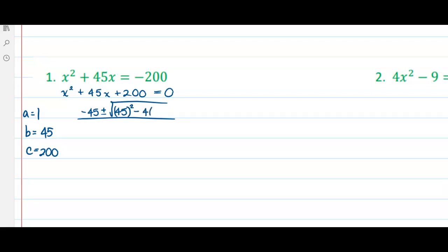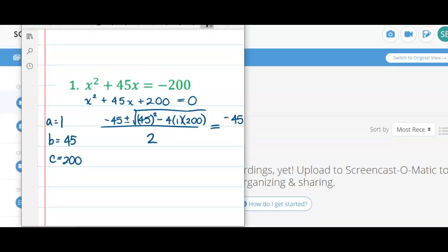Minus 4 times a times c, all over 2 times a, which is just 2. Next we need to simplify. And we're going to start by simplifying what's under the radical. We can use our calculator for this.